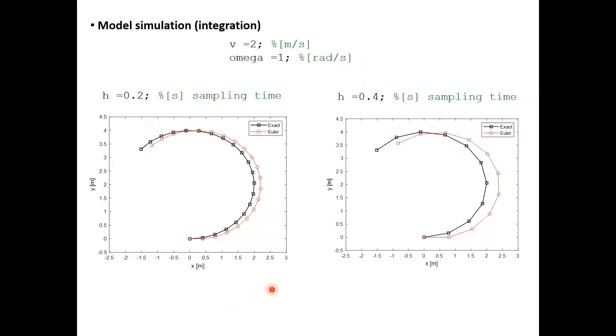Let's look now at the result of simulating the exact discrete model and the Euler model. Here we are starting from the same initial position, which is the origin in this case, and we're giving a constant linear speed to the robot v and a constant angular speed to the robot ω. We expect that our robot will move along a circular path for these speeds. We do the simulation for two sampling times, which we'll call h here, so we do that for h = 0.2 seconds and h = 0.4 seconds. As you can tell already from these two figures, there is already a clear mismatch between the result of Euler and the exact model. This becomes even worse when we use a large sampling time.